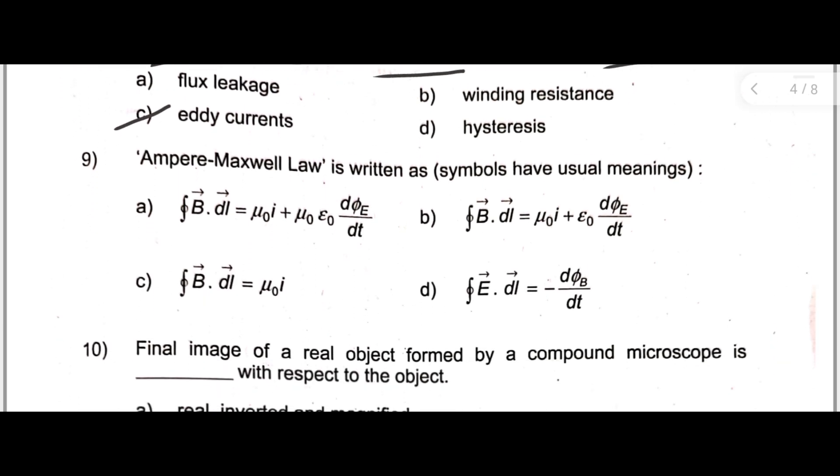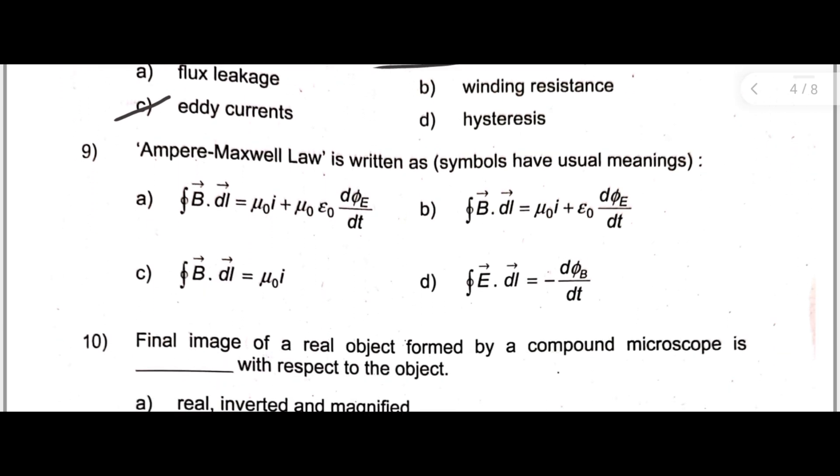Next one: Ampere-Maxwell law is written as - symbols have usual meanings. Here the correct answer is option A: integral of B·dl = μ₀I + μ₀ε₀ dΦₑ/dt.